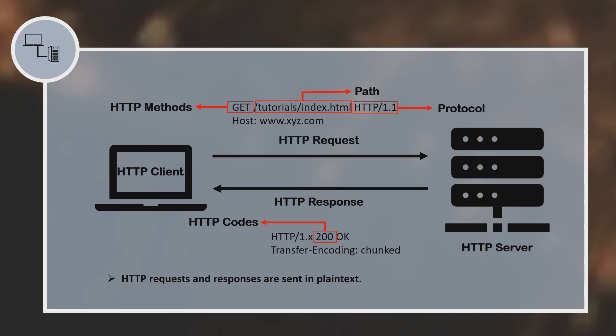There are a few fields in the header of the HTTP request that you should know. The first one is the HTTP method — it is basically the type of action which the client is requesting from the server, which we will discuss in detail later. The next one is the path, which is basically the web page you are trying to access. For example, on Facebook, the path can be your profile or a link to messages or any other page. The next one is the protocol — in this case, the protocol is HTTP and its version is 1.1.